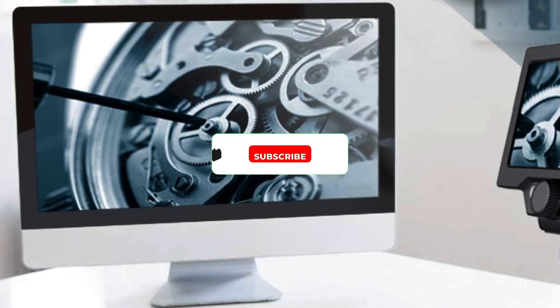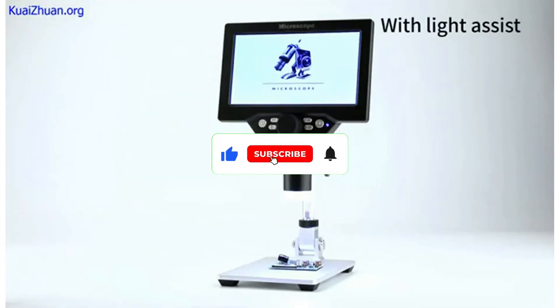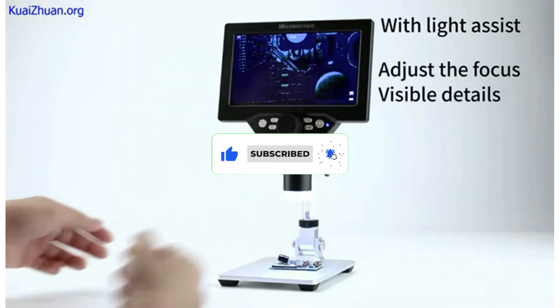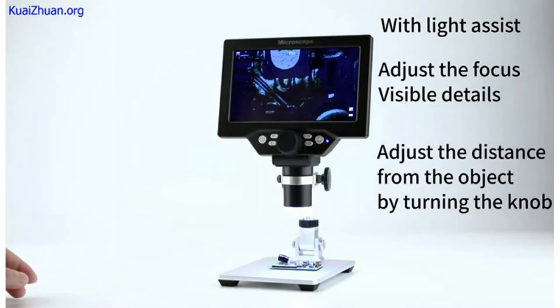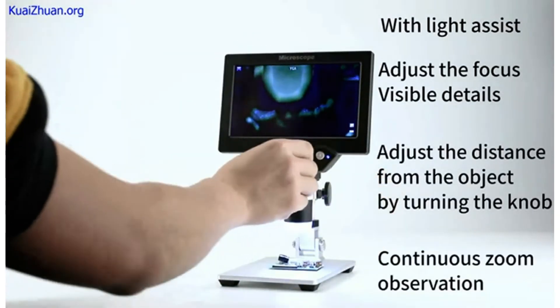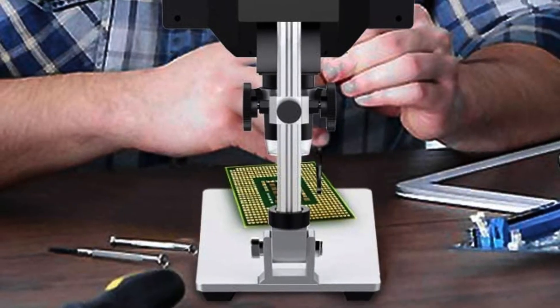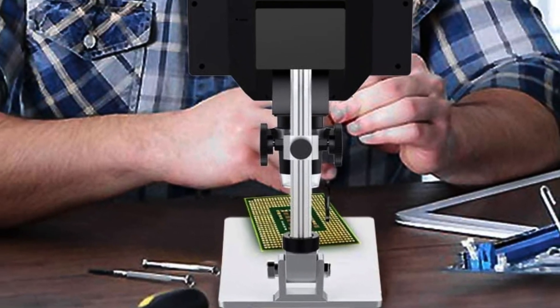For starters, you get a pretty large screen size of 7 inches with it. This can be handy for seeing the high-quality video output from its 12-megapixel camera. Another great thing about this digital microscope is that it offers up to 1200x magnification zoom, which is quite high for most users.